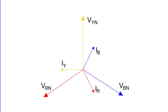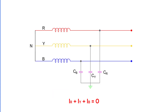Each of these capacitive currents leads its respective phase voltage by 90 degrees, as seen clearly in the phasor diagram. Since the three capacitive currents are equal in magnitude and displaced 120 degrees from each other, their phasor sum is zero: Ir + Iy + Ib = 0. This tells us that no net current flows to the ground and the neutral point remains at the same potential as the ground. So under normal conditions, an ungrounded neutral system does not pose any problems.